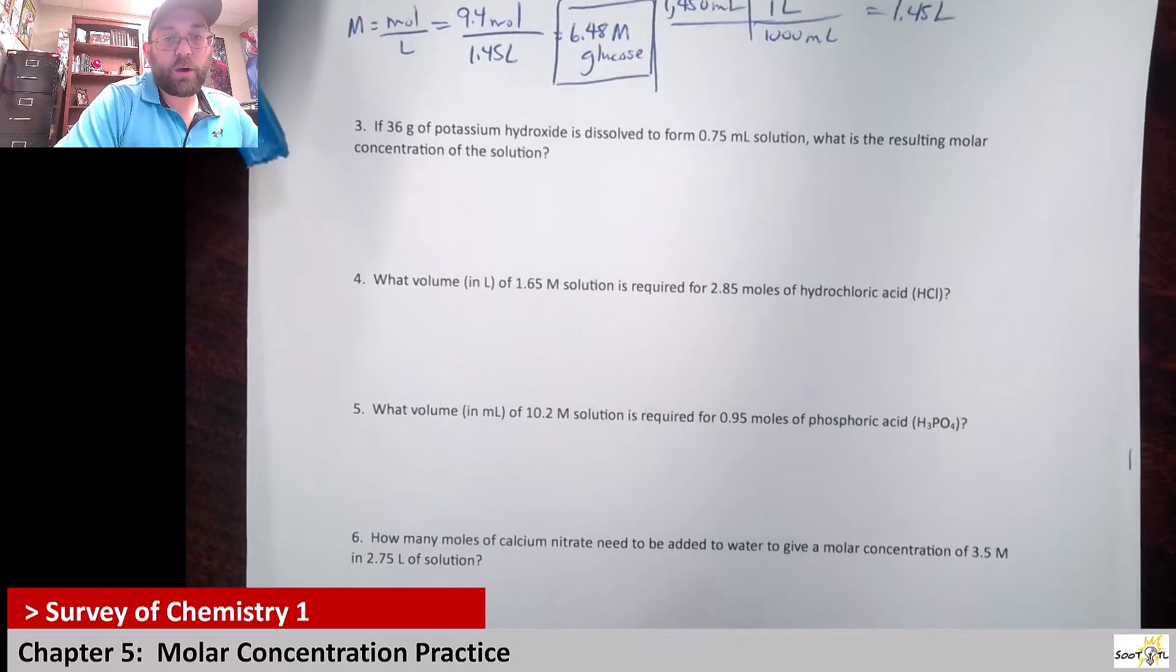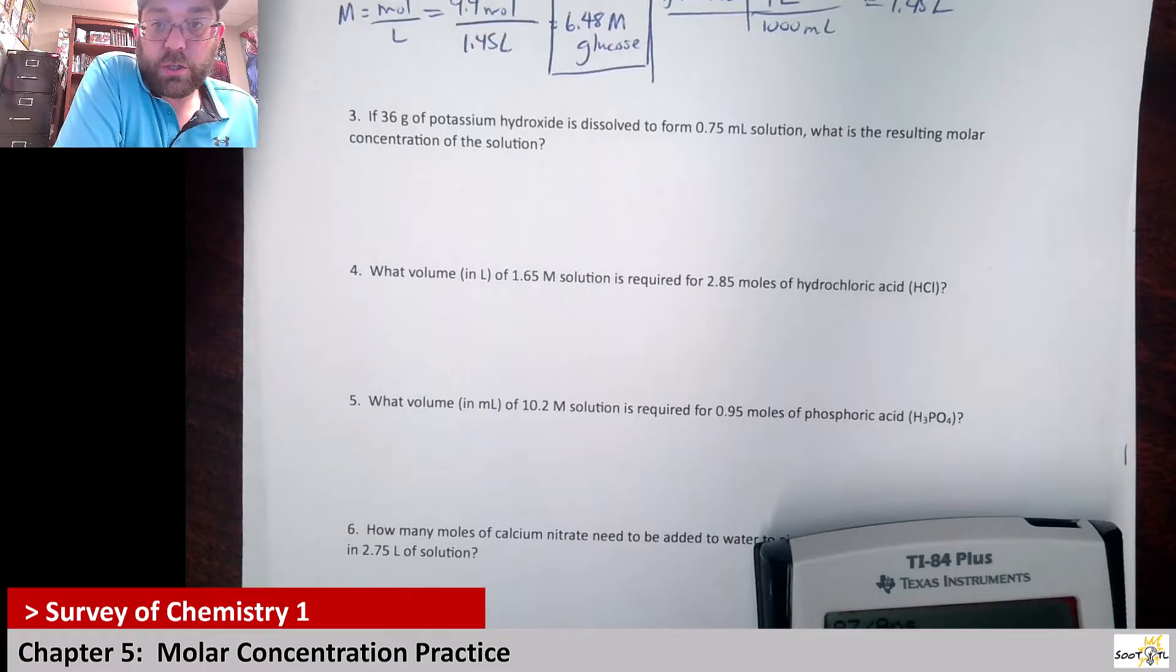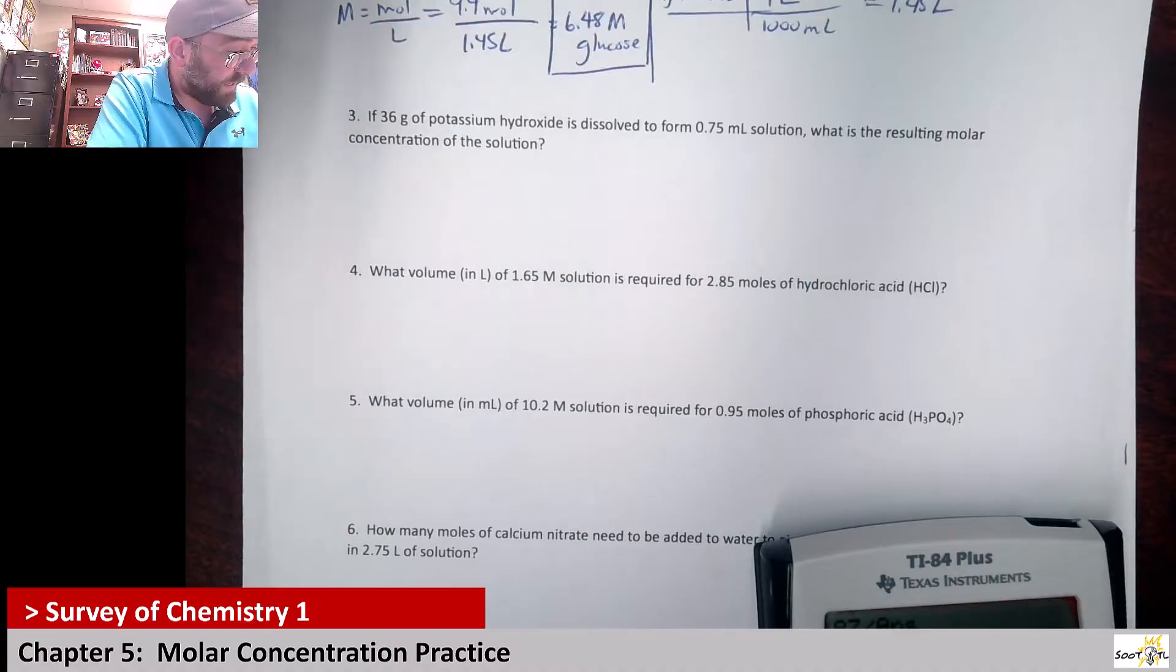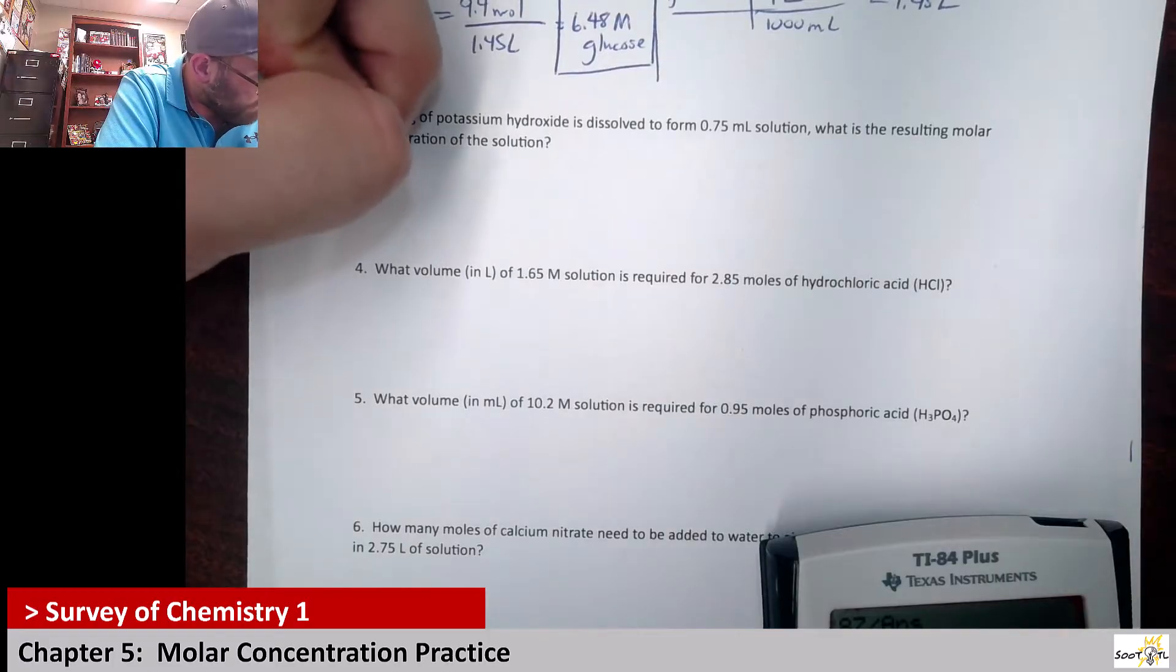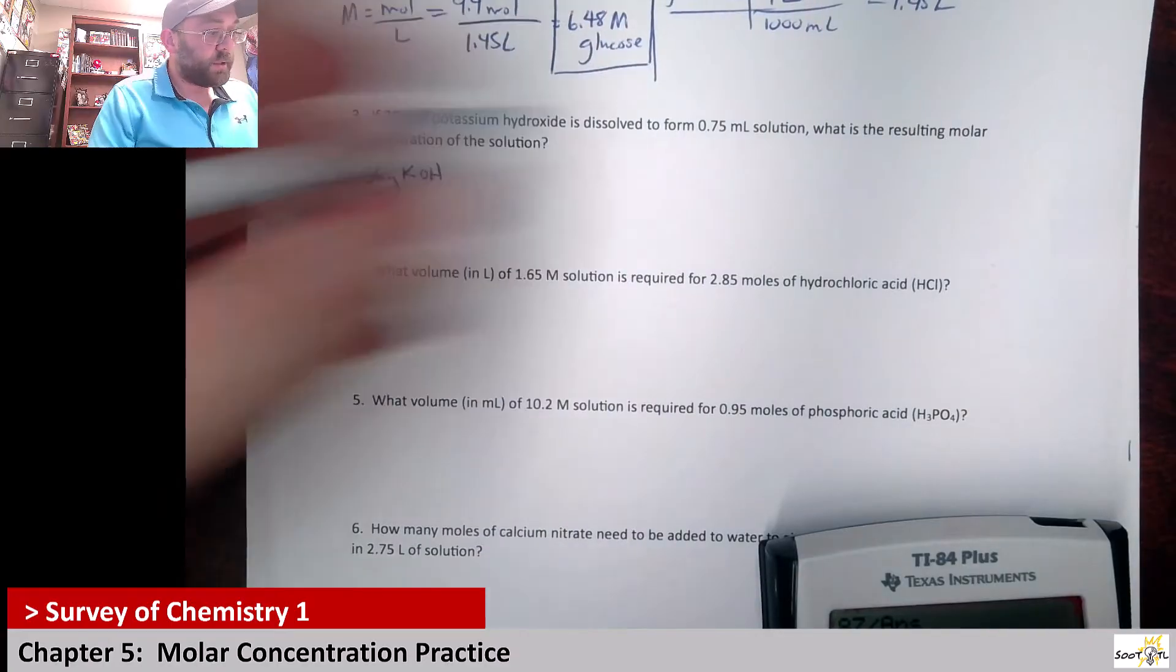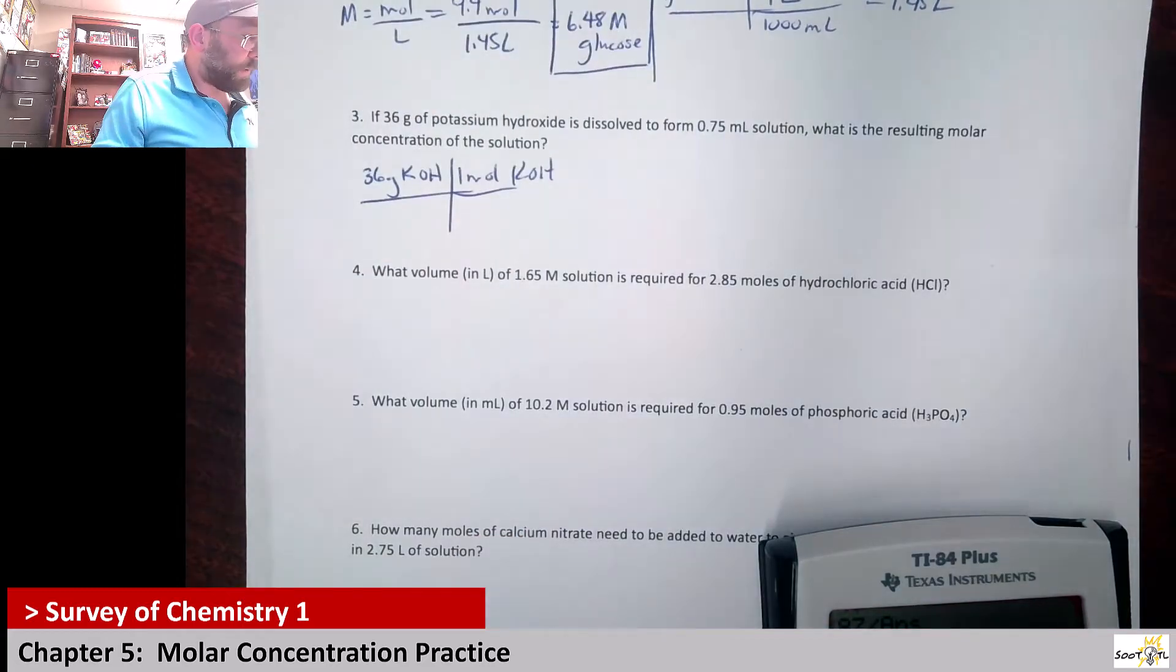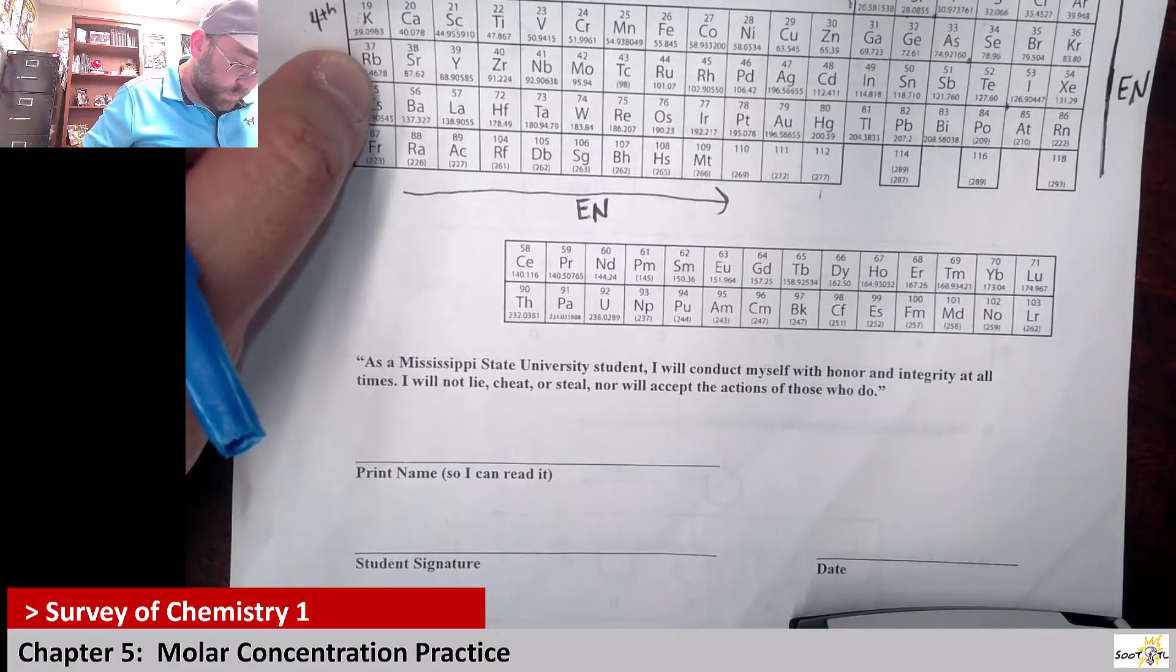Number 3 it says if 36 grams of potassium hydroxide is dissolved to form a 0.75 milliliter solution, what is the resulting molar concentration? That's super small, that's a super small solution. So 36 grams of potassium hydroxide, that's KOH. So what's the molar mass of KOH? One mole of KOH is what? Let's look at potassium right here at 39.1.